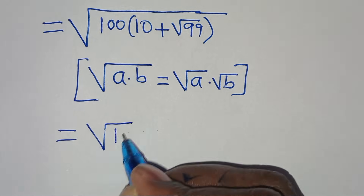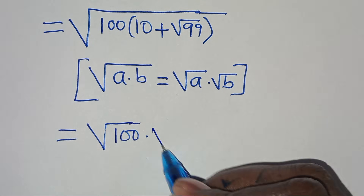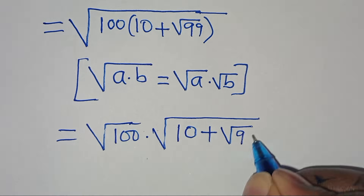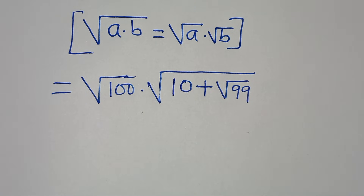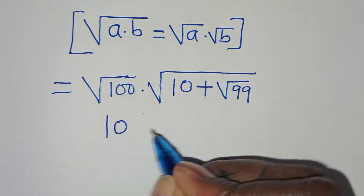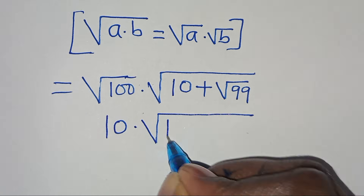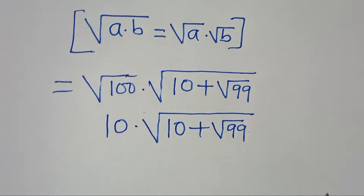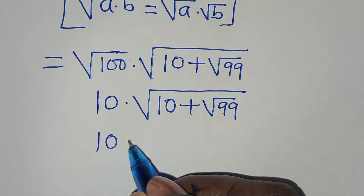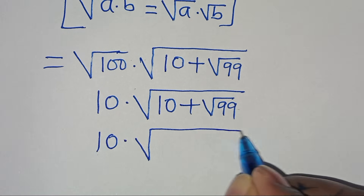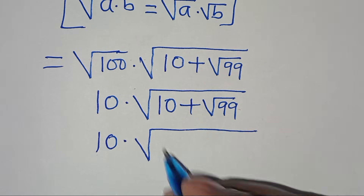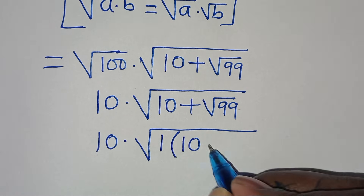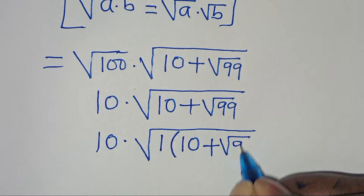Applying this property, we have square root of 100 multiplied by square root of 10 plus square root of 99. Since 1 is common here, we can factor out 1, giving us 1 times the quantity 10 plus square root of 99.